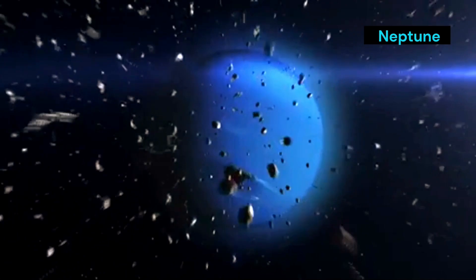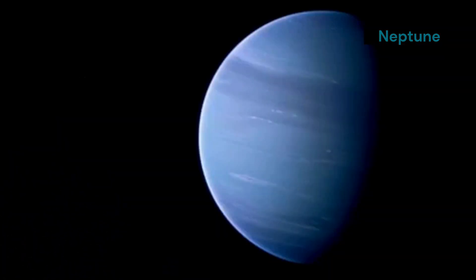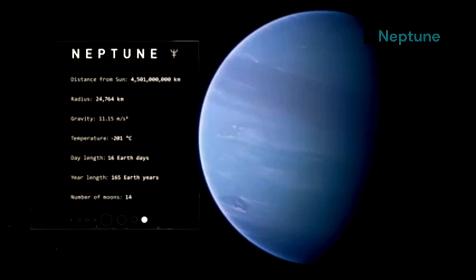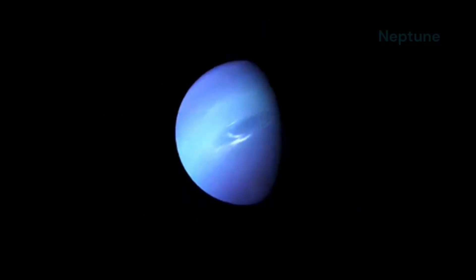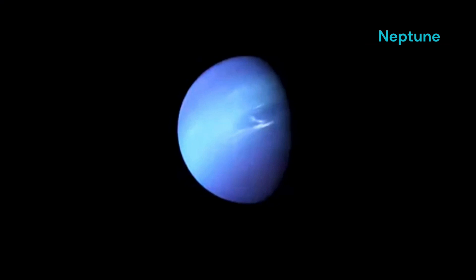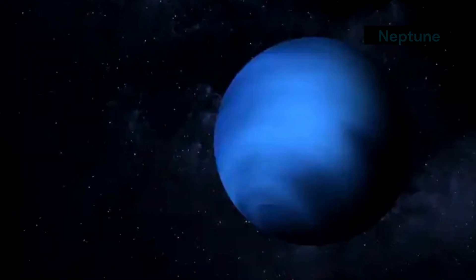Neptune is a very windy place. The planet's atmosphere is incredibly dynamic, with winds that can reach astonishing speeds. Winds whip through its atmosphere at speeds of over 1,000 miles per hour. These powerful winds are driven by the planet's internal heat, which is still a mystery to scientists. These winds are some of the fastest in the solar system. In fact, Neptune's winds are the fastest recorded in our solar system, surpassing even the mighty storms of Jupiter.